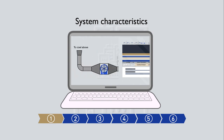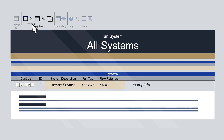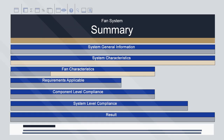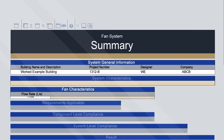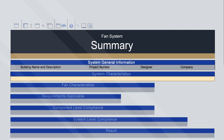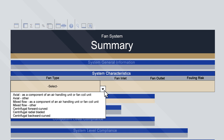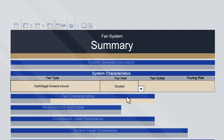Step 2: system characteristics. Navigate to the Summary sheet using the ribbon. This sheet serves as a hub for system-wide information and results. You'll notice that the project information and flow rate is prefilled from the previous step. Select the system characteristics using the drop-down menus. For this example, we'll select a centrifugal forward curved fan, with a ducted inlet, a ducted outlet and lint representing a fouling risk.